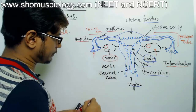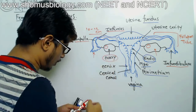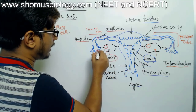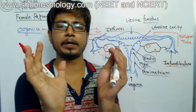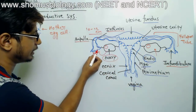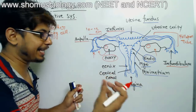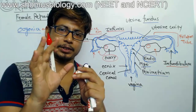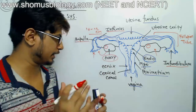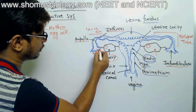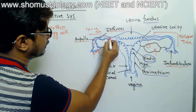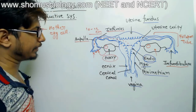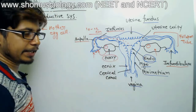Once the egg, also known as the ovum, is produced, it is released from the ovary. The infundibulum, with its large surface area from finger-like fimbriae, receives the released ovum and catches it. The egg then makes its journey through the fallopian tube toward the uterus.